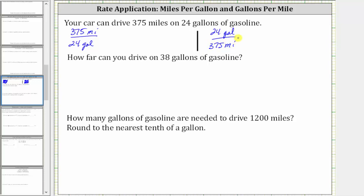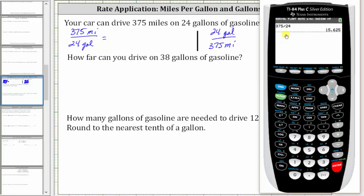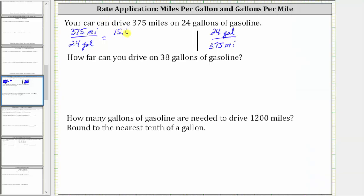Now let's determine the unit rate for each of these rates. To determine the unit rate, we have to determine the quotient. For the first rate, we divide 375 by 24. 375 divided by 24 is equal to 15.625. We can make this a fraction with a denominator of one, making the unit rate 15.625 miles per one gallon.